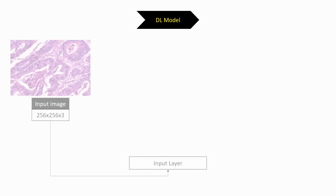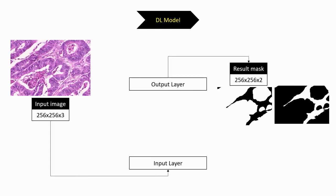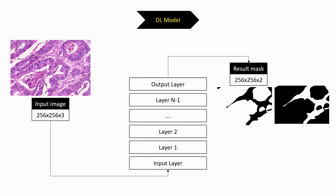Let's focus on what we can find in a deep learning model. A deep learning architecture is first characterized by its inputs and outputs, which are constrained by the task. In a segmentation problem, the input will typically be an image of a certain size — say 256×256 pixels with three color channels — and the output will be a binary mask with 256×256 pixels and two channels encoding the probability of being in the background and in the foreground.